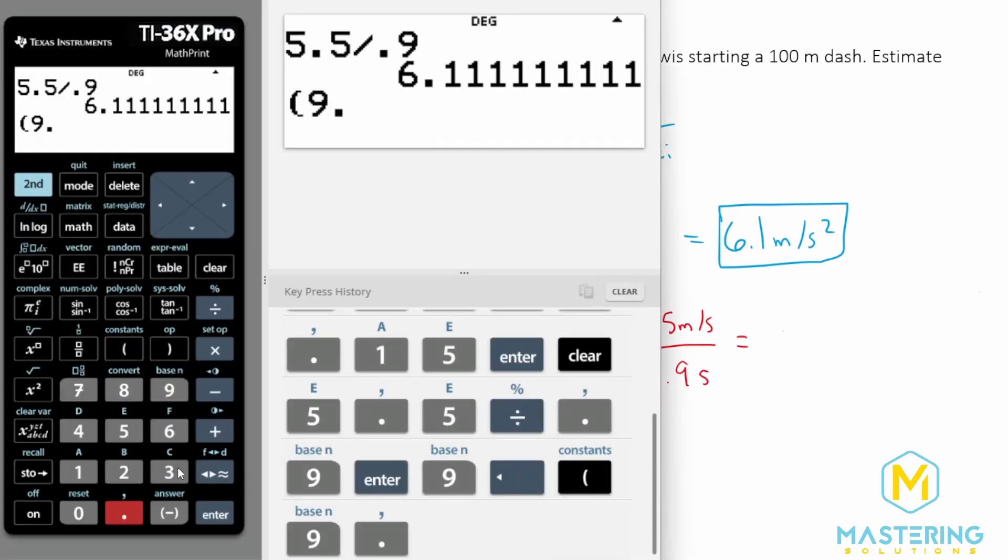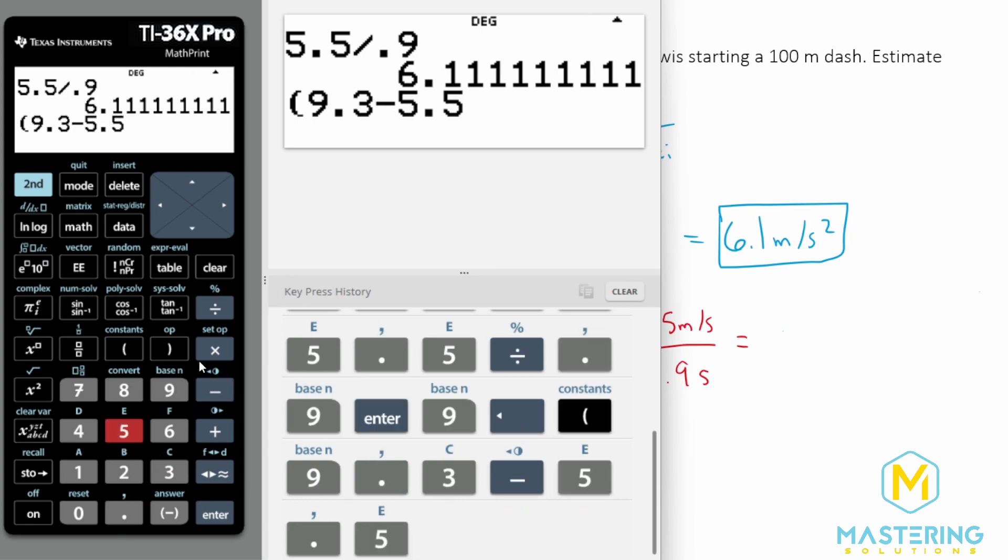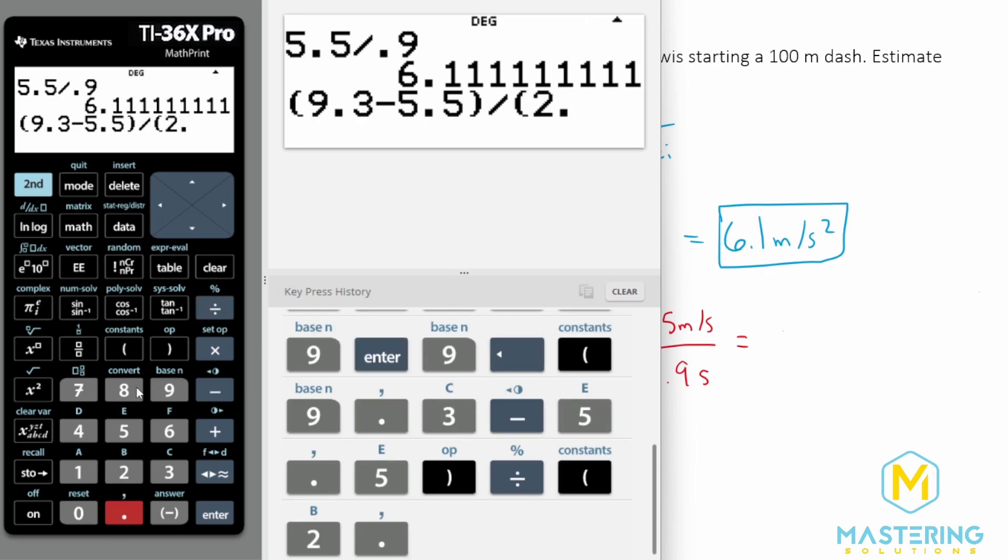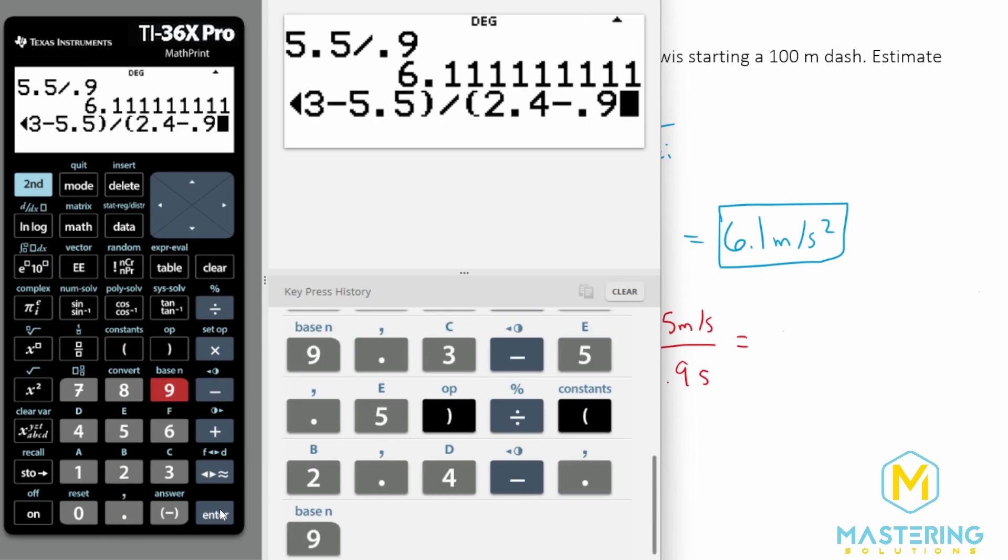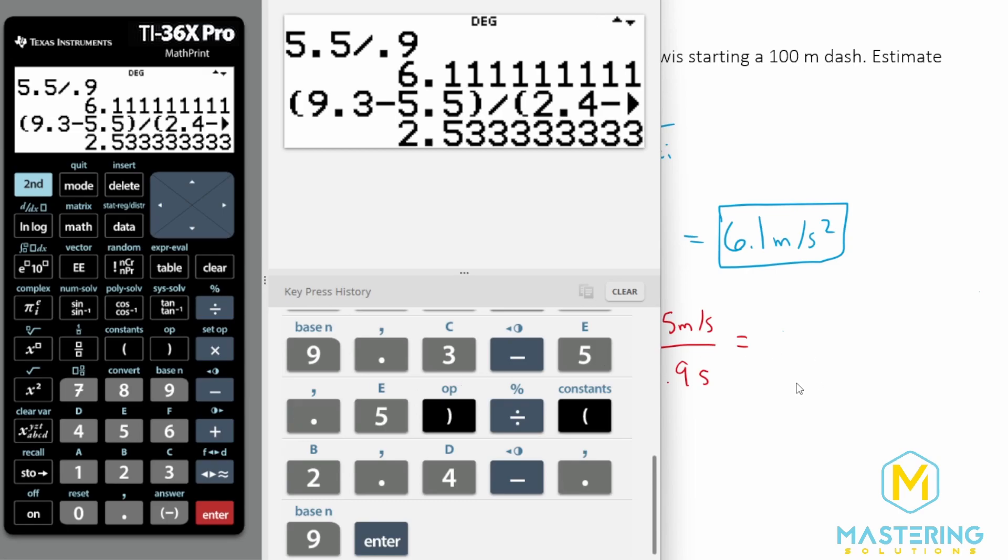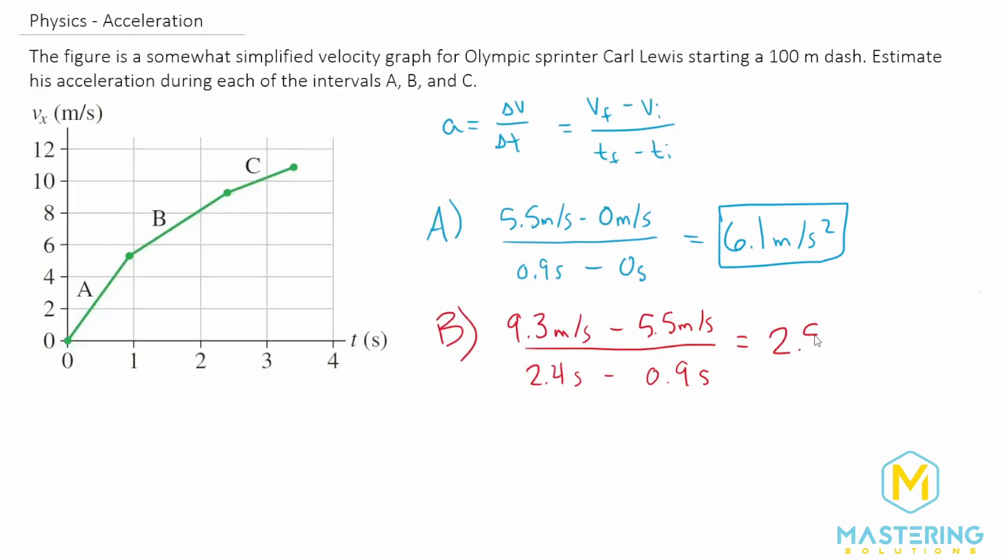9.3 minus 5.5 divided by 2.4 minus 0.9. Okay, so 2.5. Okay, so 2.5 meters per second squared is the acceleration for B.